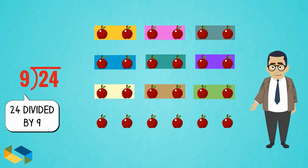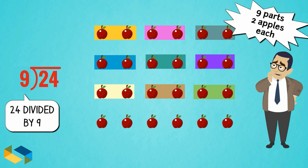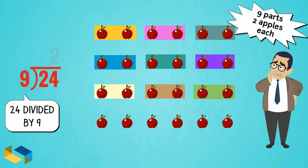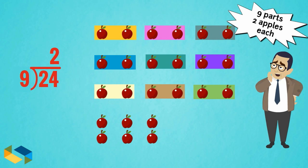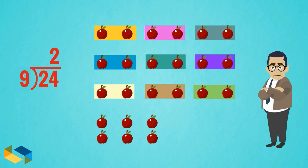So, in order to make 9 equal parts, we get 2 apples exactly in each group. And, as you observe, we also get these 6 apples that are left over, which is called as the remainder.